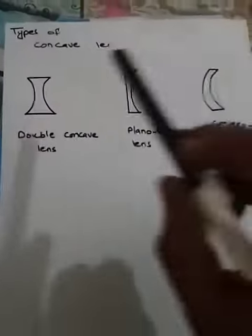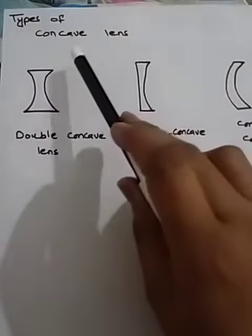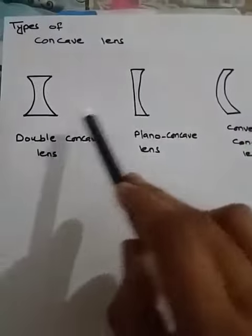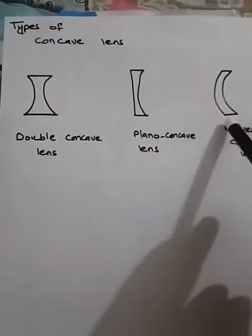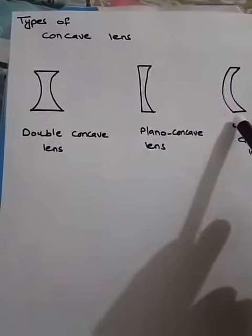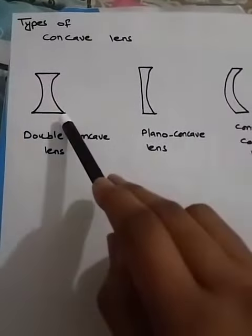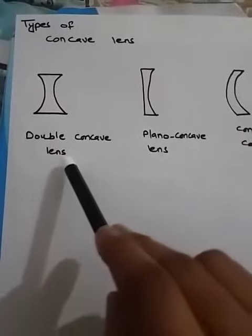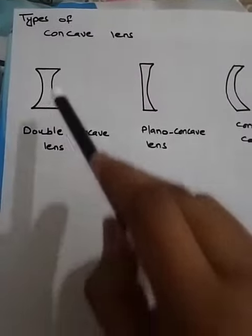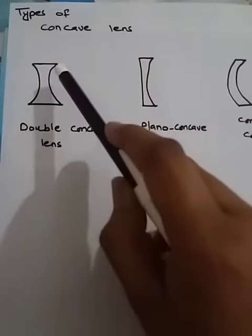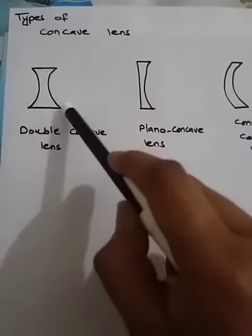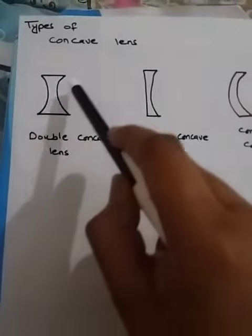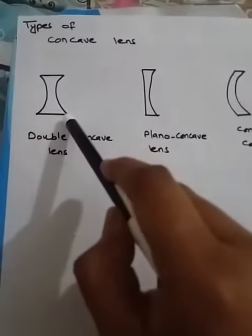Now, the concave lens is further divided into three different types. The first one is double concave lens, where both sides are curved inwards.